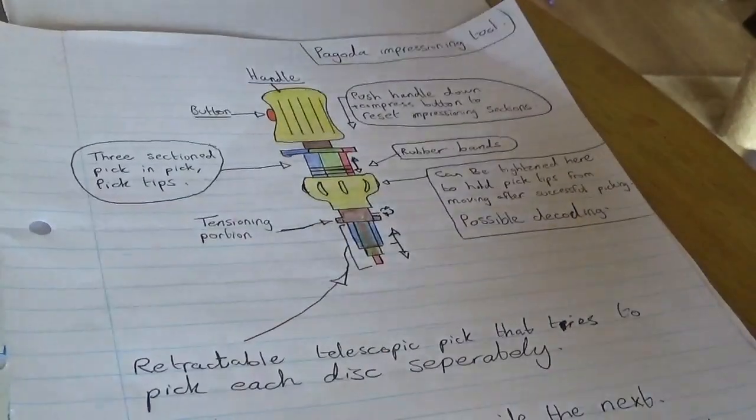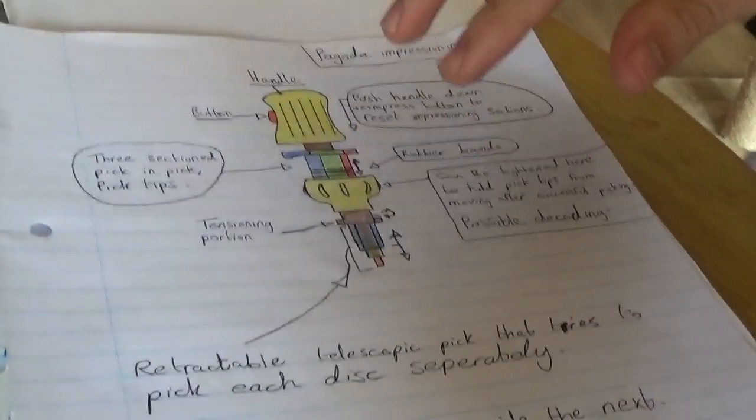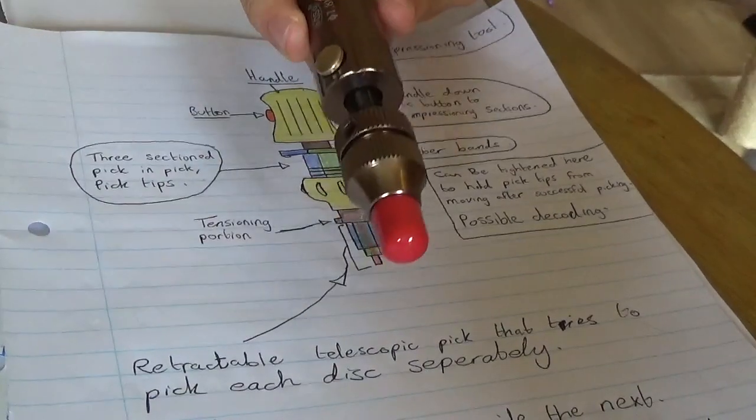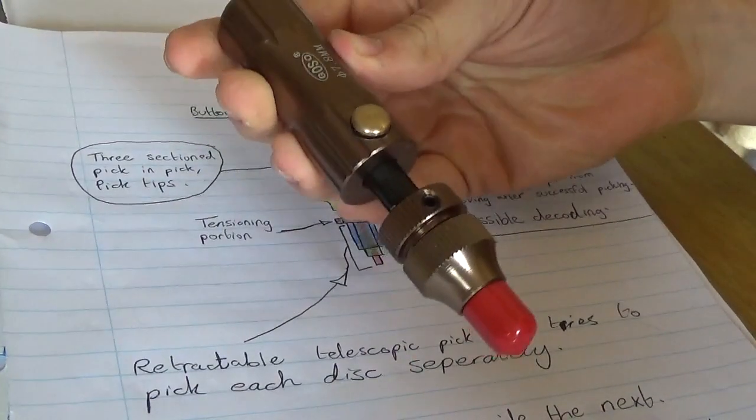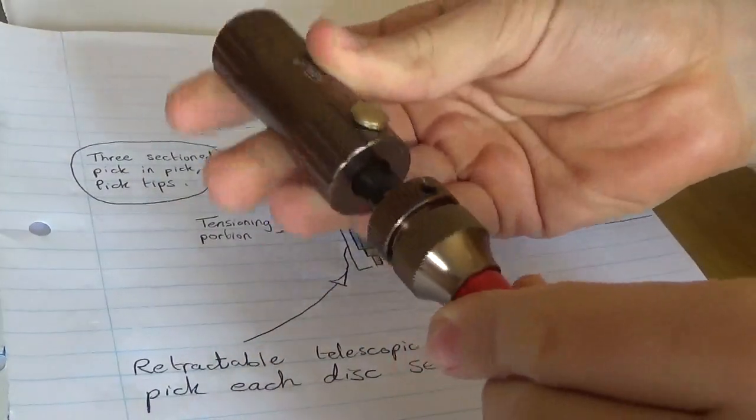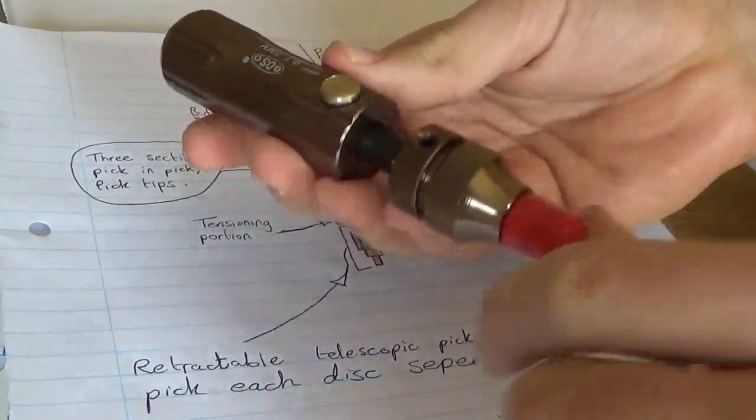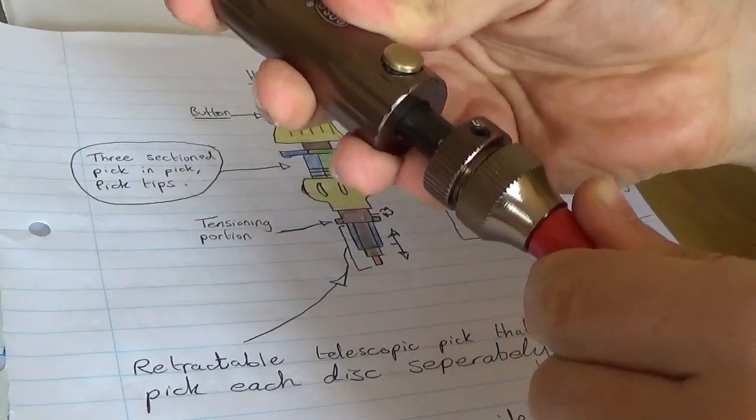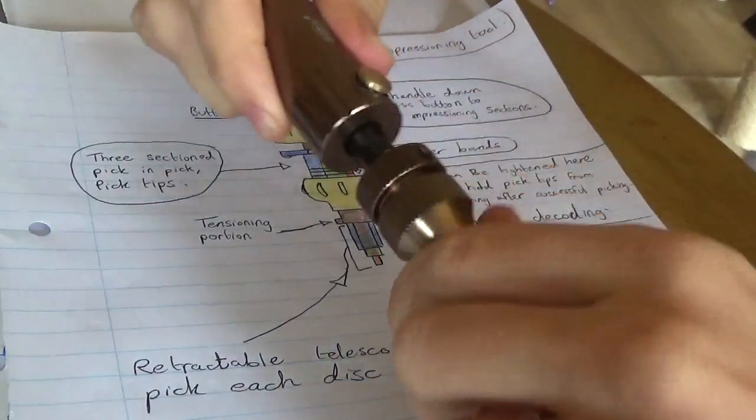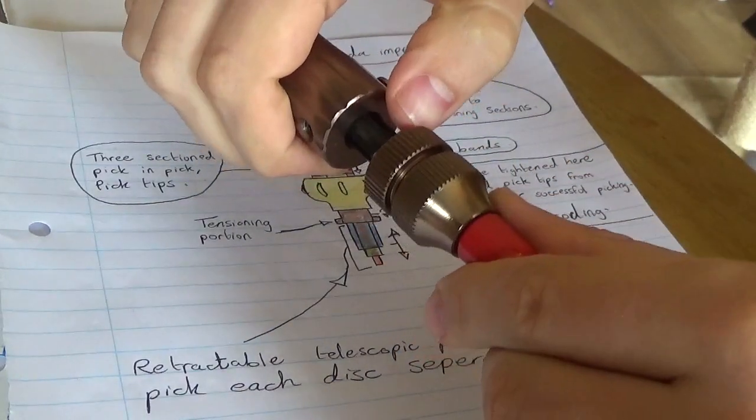The concept for this, the idea, comes from something like this. This is the tubular impressioning tool, the Goso model. The ideas on how to make an impressioning tool for these pagoda locks comes from this, a very similar idea.